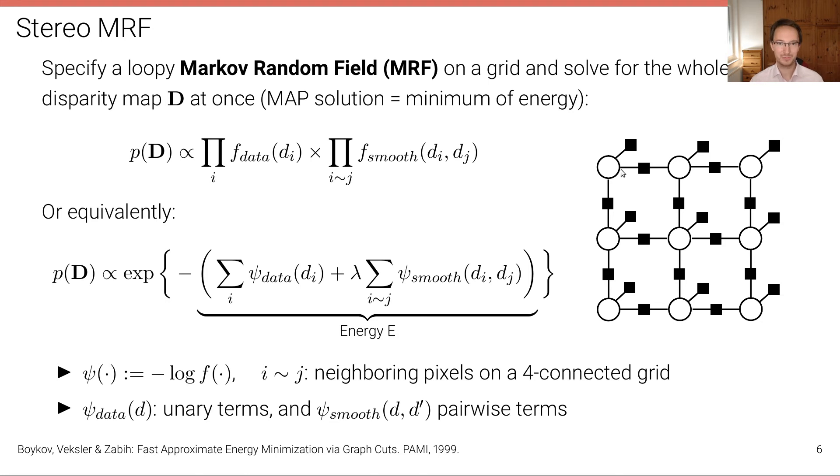But then we also incorporate our prior knowledge about the smoothness of disparity maps into this Markov random field. And we do this by adding pairwise connections in this factor graph here, pairwise potentials that connect to neighboring sites. So this is a very simple graphical model. It can be formulated as a standard undirected Markov network or Markov random field, but it can also be formulated easily as a factor graph as done here. So we have unary factors and pairwise factors. And this is reflected in this formula here. So what we want to do is we want to solve for the entire disparity map now, not just for the disparity at a single pixel, but for the entire disparity map.